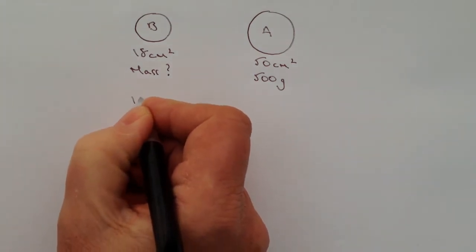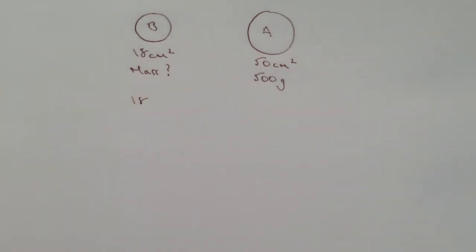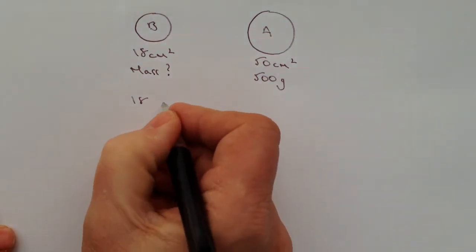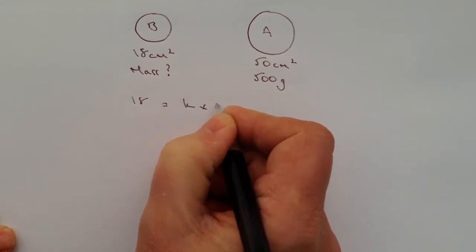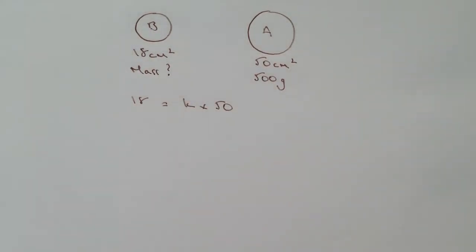What I mean by that is we've got 18 centimeters squared is the surface area of shape B and that's going to be equal to something which we're going to call K multiplied by 50 centimeters squared for shape A.